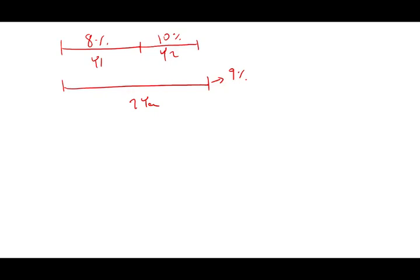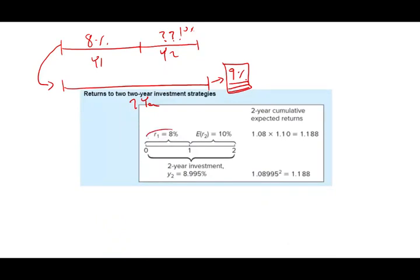If the two-year bond is offering 9% and the one-year bond is offering 8%, you can find out what the year-two rollover rate should be — because rolling over should compensate you with a total of 9%. Mathematically: 1.08 times 1.10 gives 1.188, and the square root minus 1 gives approximately 8.95%, or roughly 9%. So the two-year investment should be 9%.